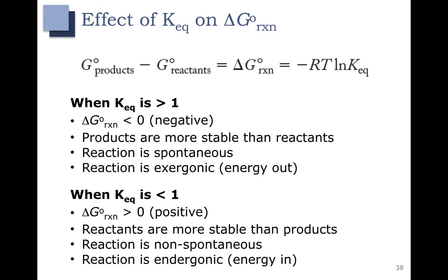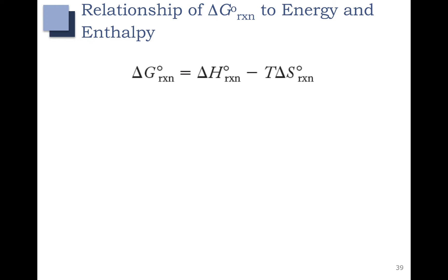You might equate these situations to trying to ride a bike. If you are going uphill, that is the situation where Keq is less than 1 — it is non-spontaneous, and you are going to have to put a lot of energy in to get your bike up the hill. When Keq is greater than 1, that would be downhill — you're riding your bike downhill.